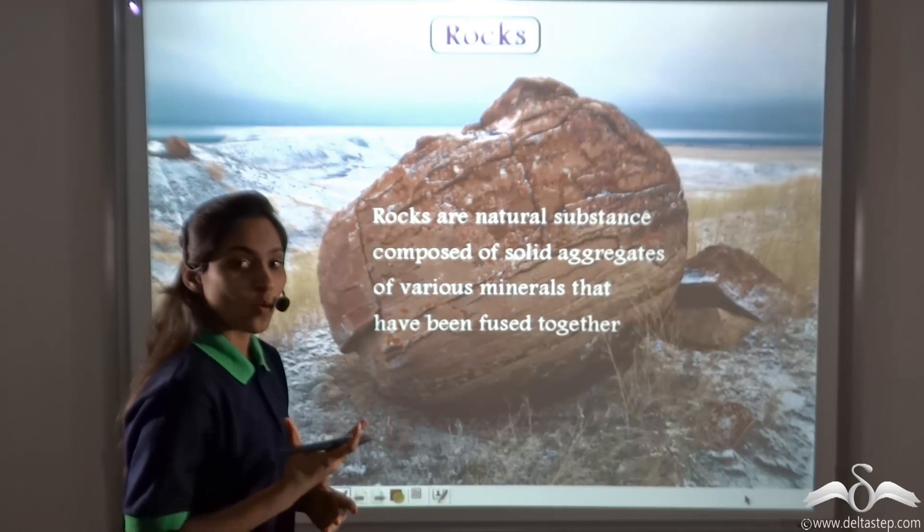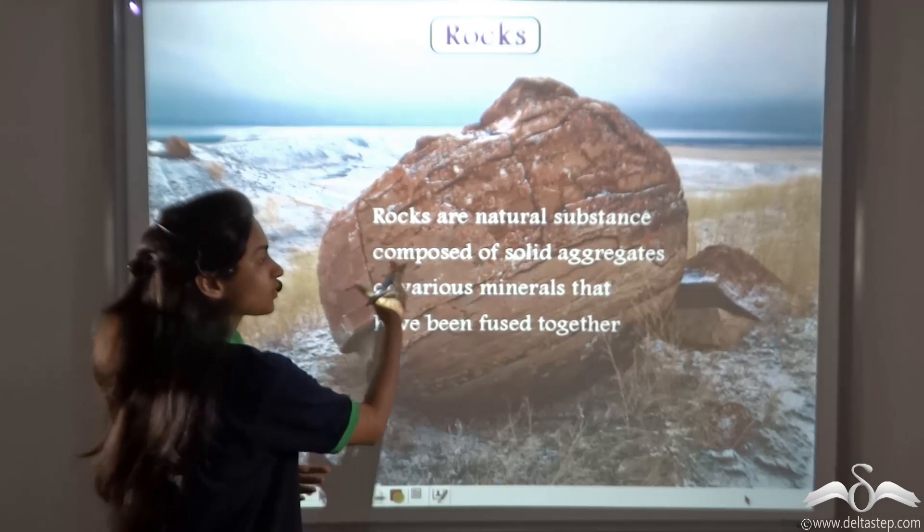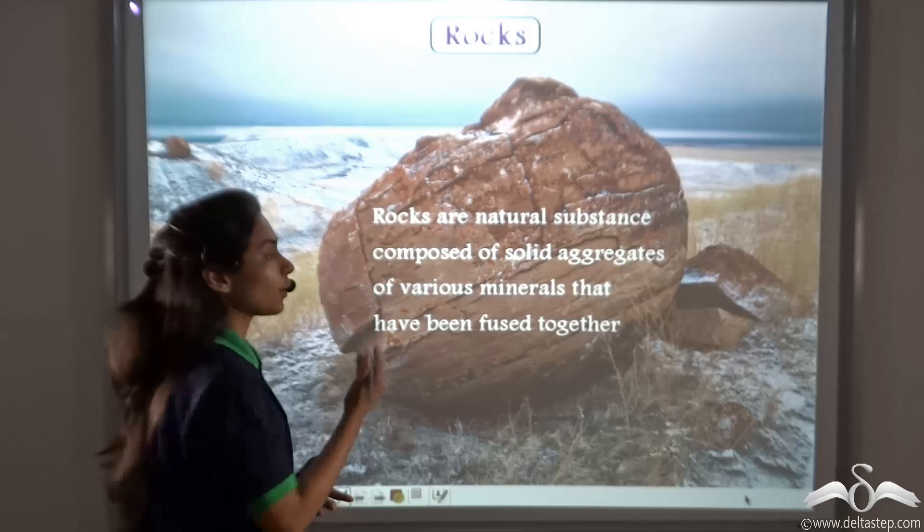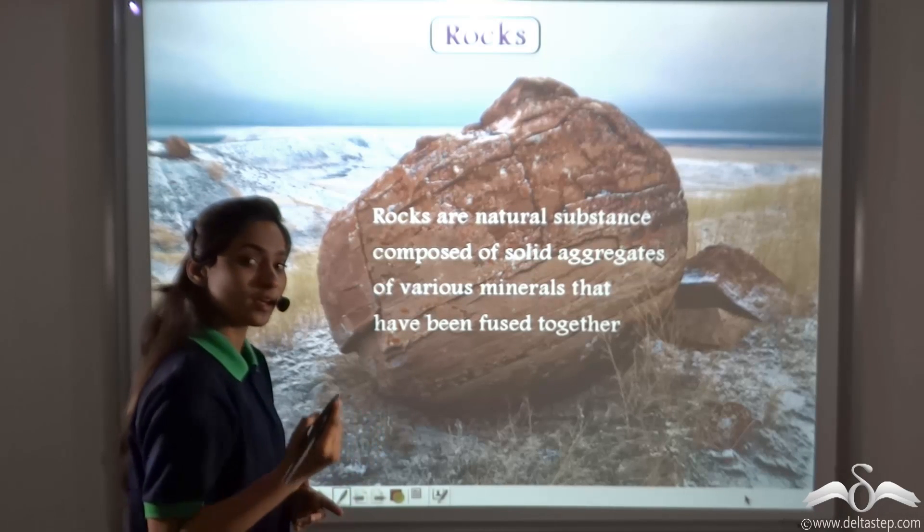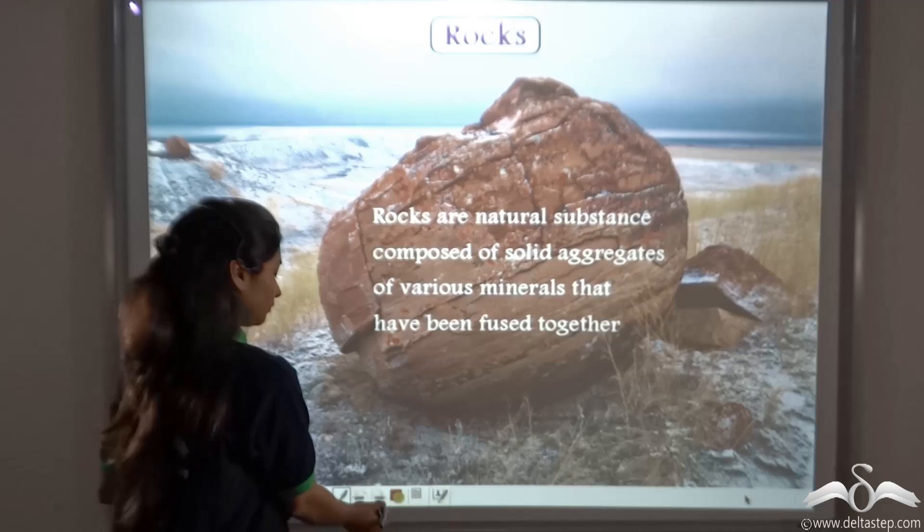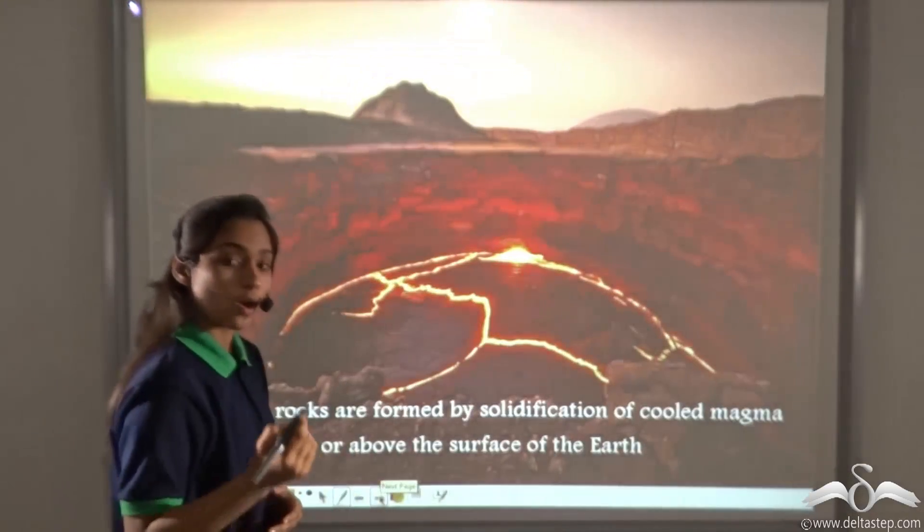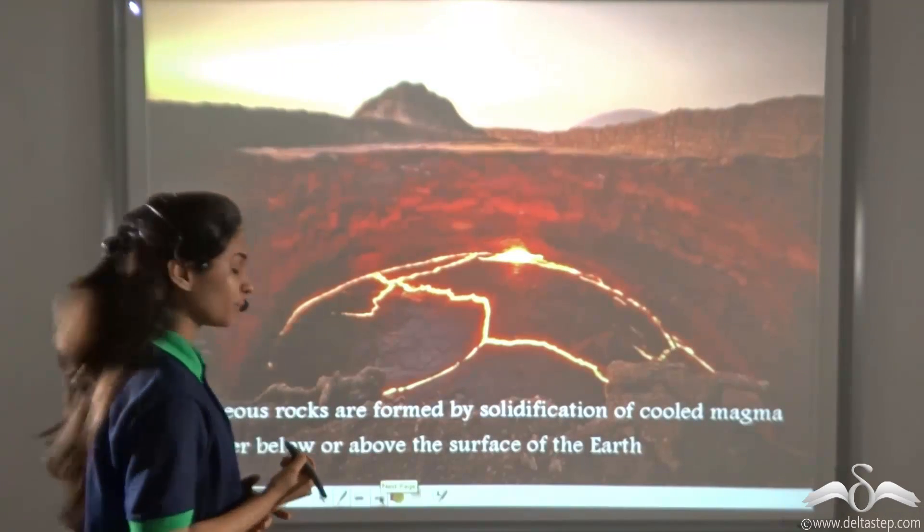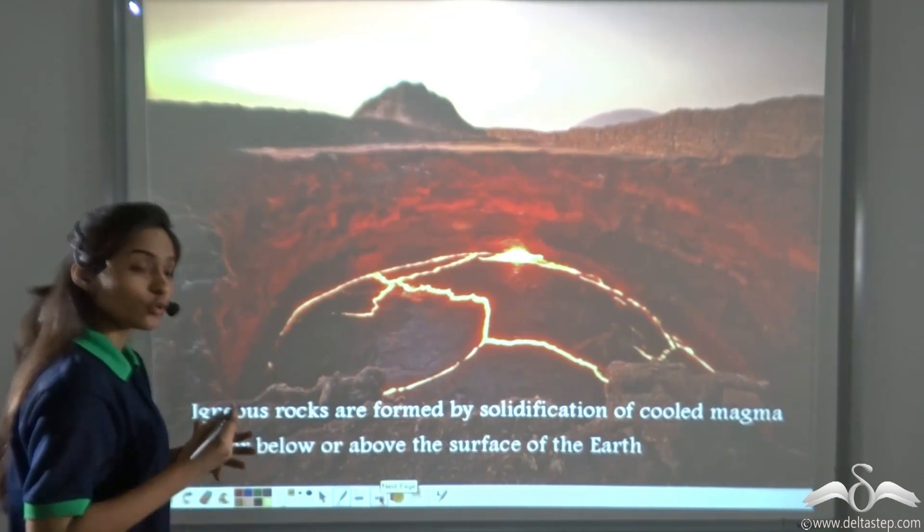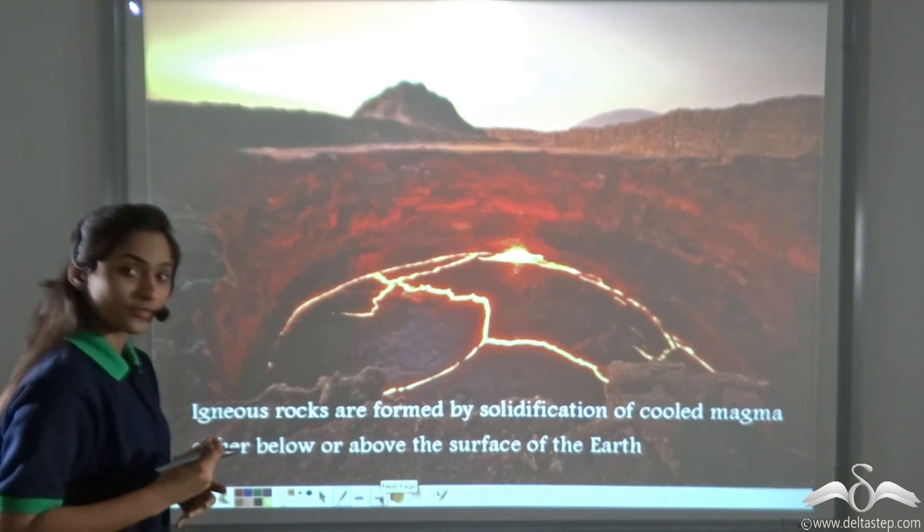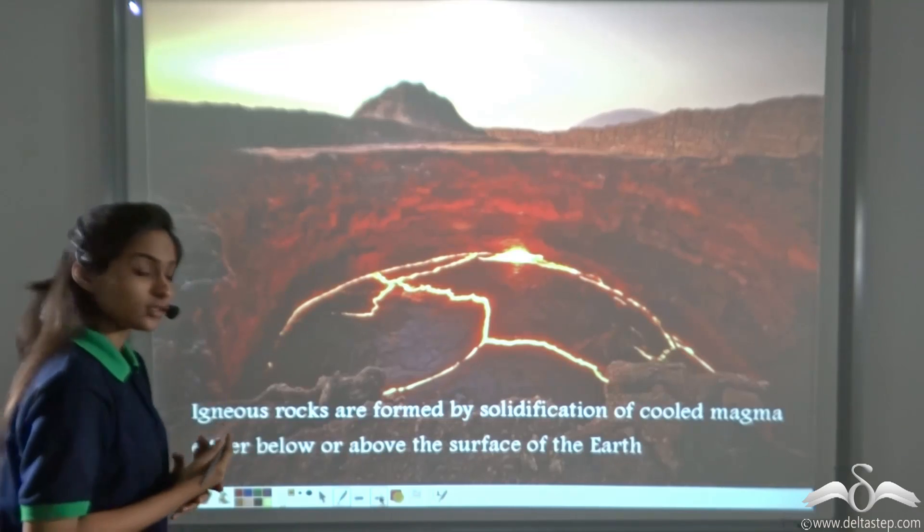You already know what rocks are. Rocks are natural substances composed of solid aggregates of various minerals that have been fused together. You also know how igneous rocks are formed. Igneous rocks are formed by solidification of cooled magma either below or above the surface of the Earth.